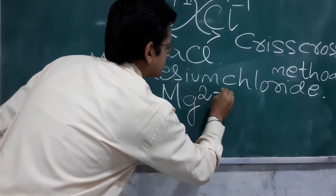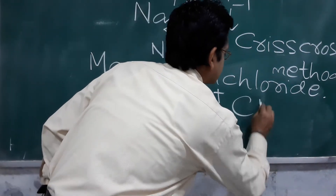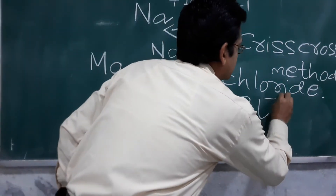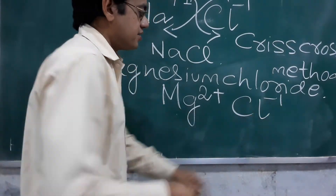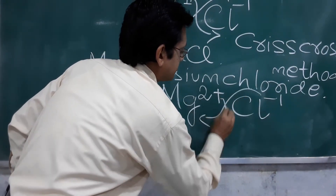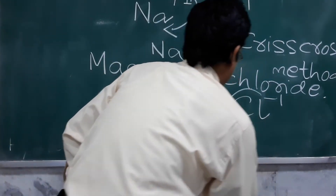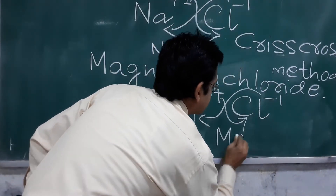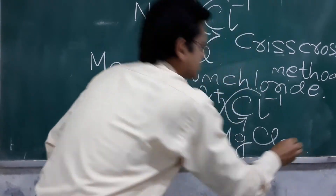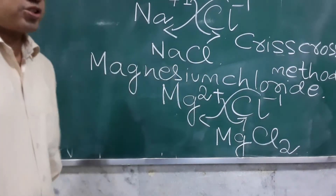Now let's do magnesium chloride. The valency of magnesium is 2, and the valency of chloride is 1. Using the criss-cross method, it becomes MgCl₂. Students, please watch carefully.